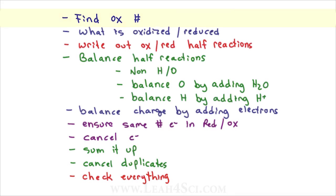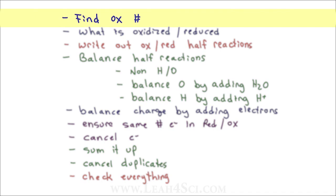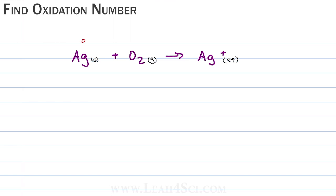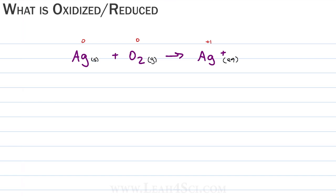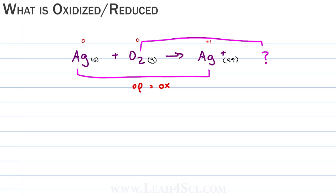Remember the checklist. First we identify the oxidation number of everything involved. Ag solid by itself has the oxidation number of zero. O2, which is in its elemental state, has an oxidation number of zero. Ag+ is a monoatomic ion with a charge of plus one, giving an oxidation state of plus one. Next we identify what is oxidized and reduced. If we pair up Ag solid with Ag+, Ag zero goes up, telling us it's the oxidation half reaction — but what do we pair up the oxygen with? There's nothing else here.